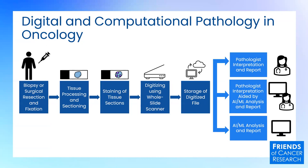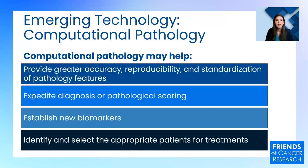These AI and ML platforms can then aid the pathologist in their interpretation and reporting, or stand alone to generate results. Computational pathology has the potential to provide greater accuracy, reproducibility, and standardization of pathology features, to expedite diagnosis or pathological scoring, to establish new biomarkers, and to identify and select the appropriate patients for treatments to aid in oncology drug development and clinical care.